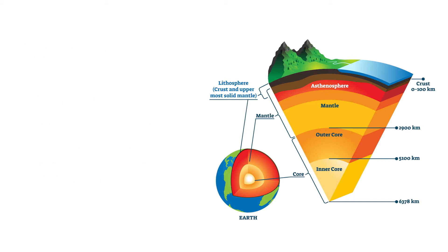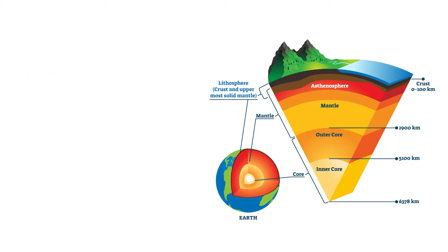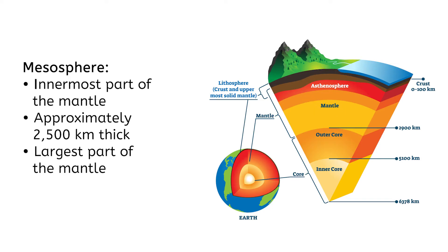Under the lithosphere is the asthenosphere. This section of the mantle is approximately 350 kilometers thick, with a consistency described as solid plasticity. It is made of slow moving rocks, which allows the tectonic plates of the lithosphere to move. The innermost section of the mantle is the mesosphere. This section is approximately 2,500 kilometers thick, and is the largest part of the mantle.